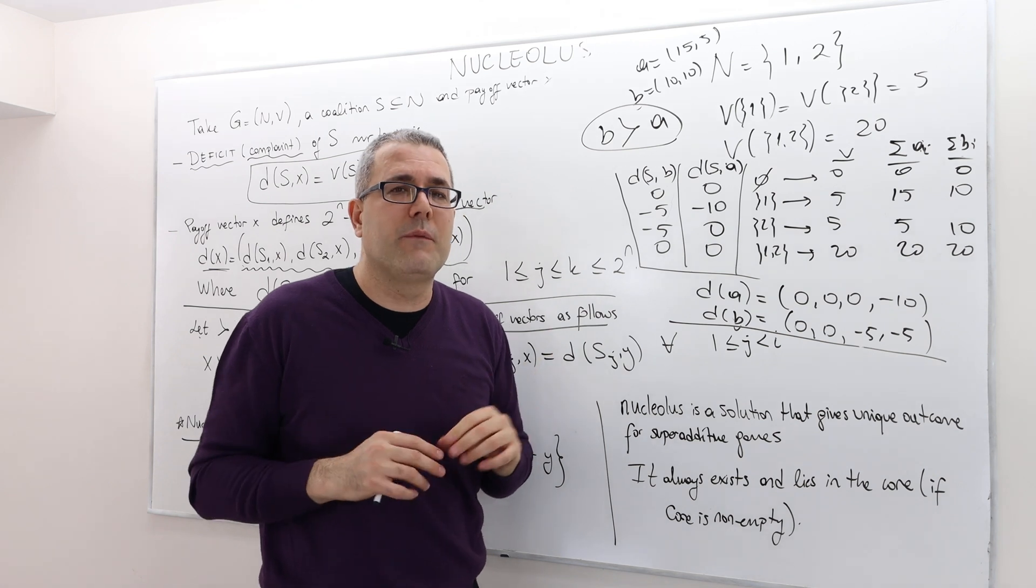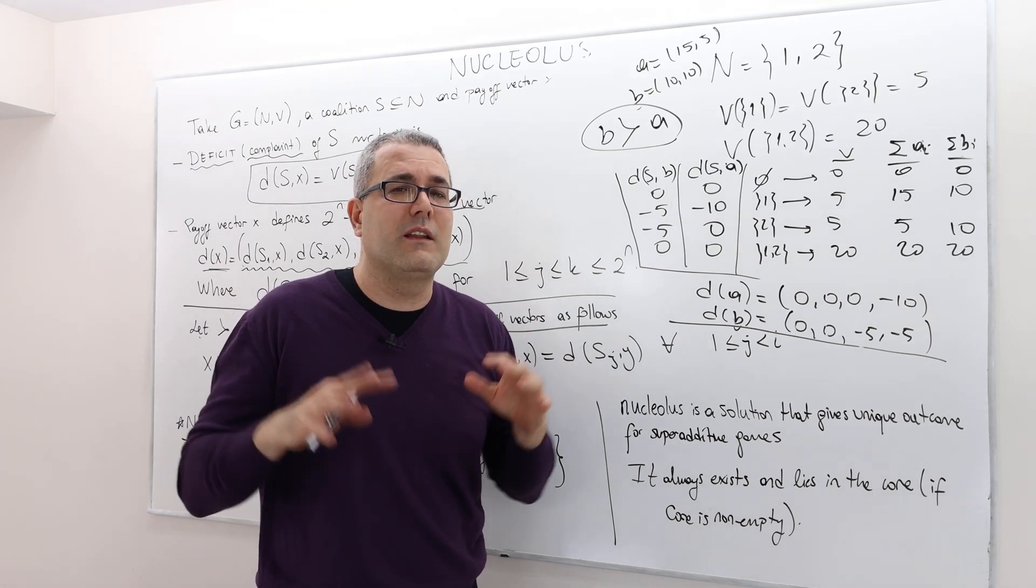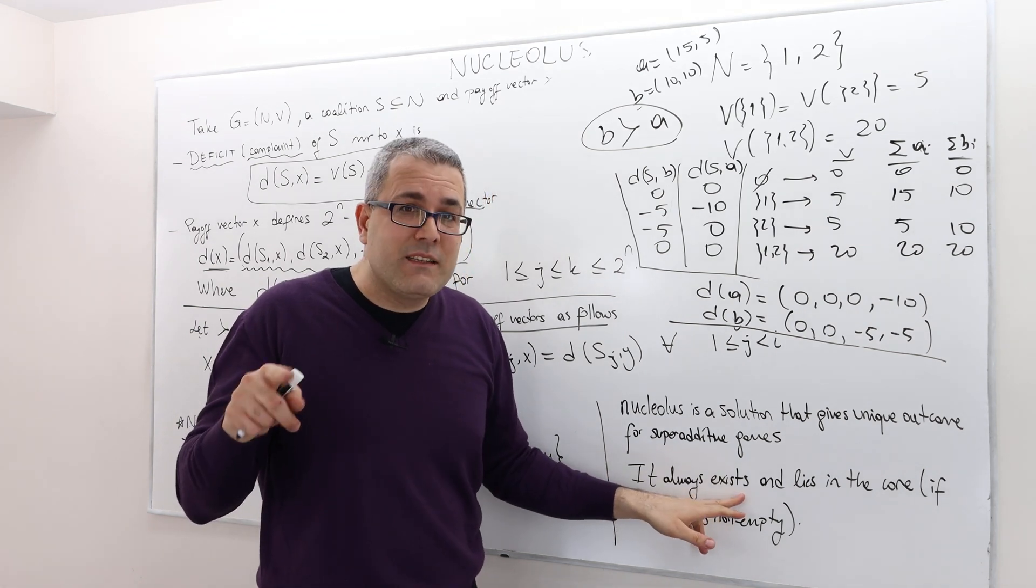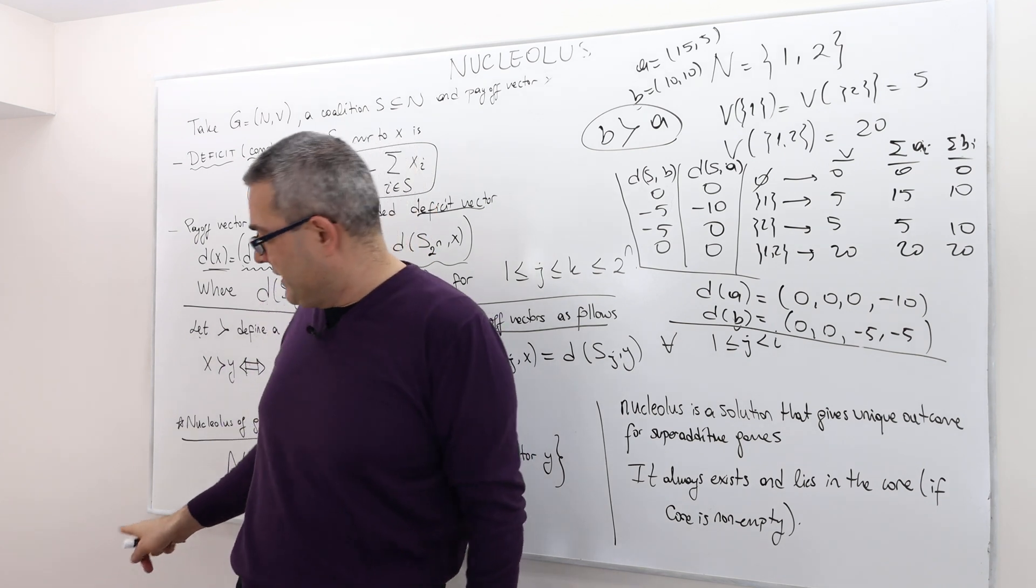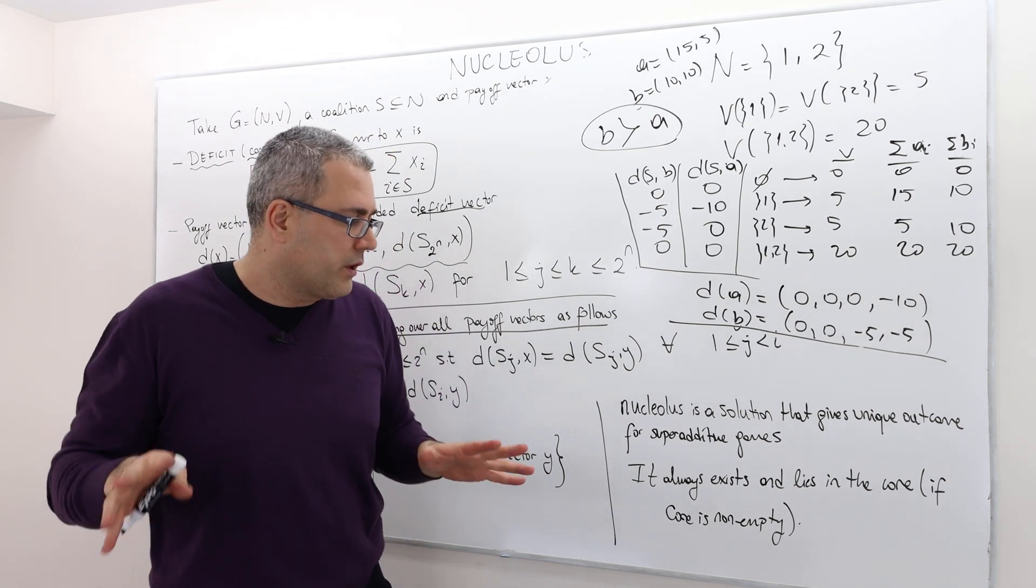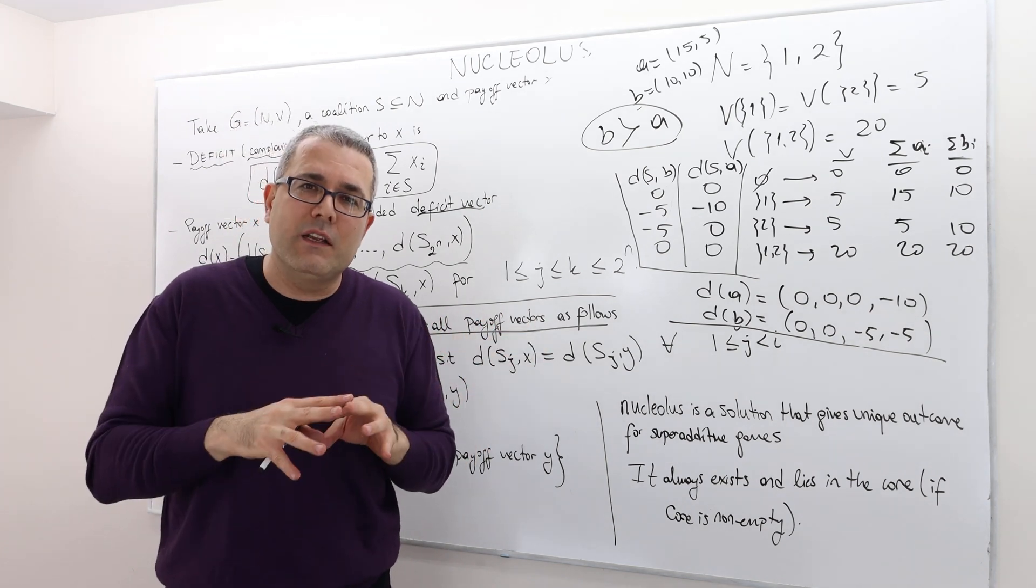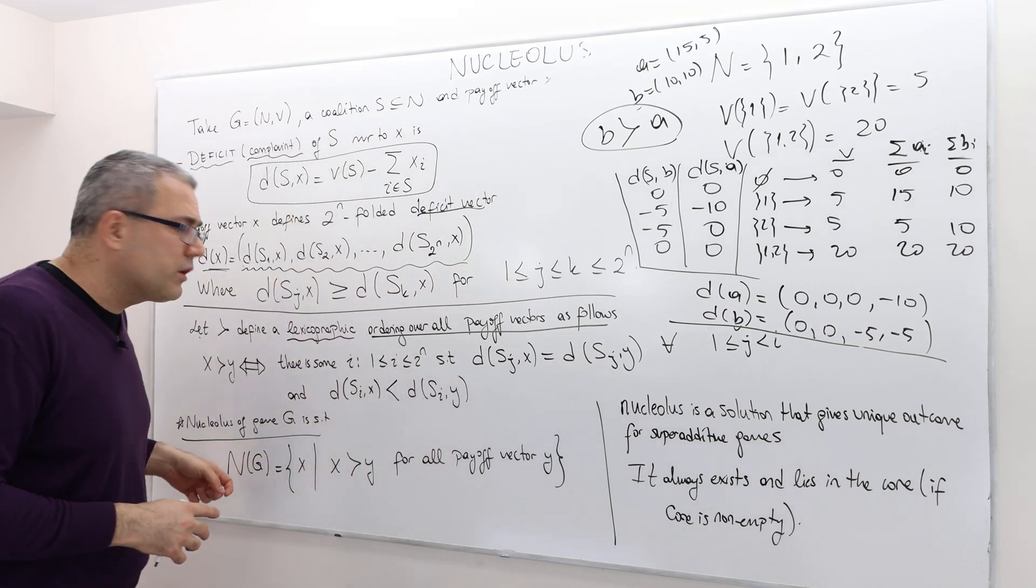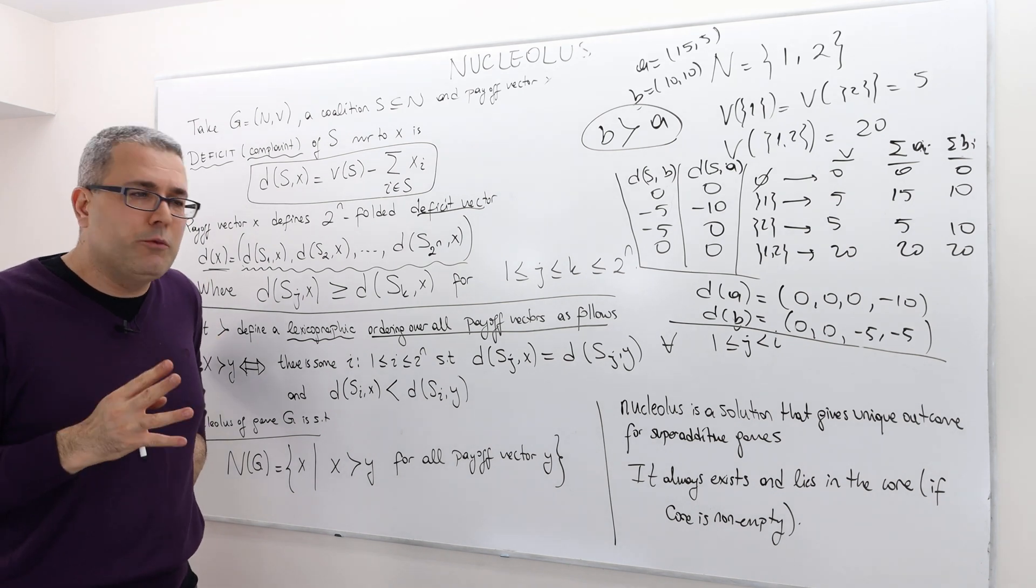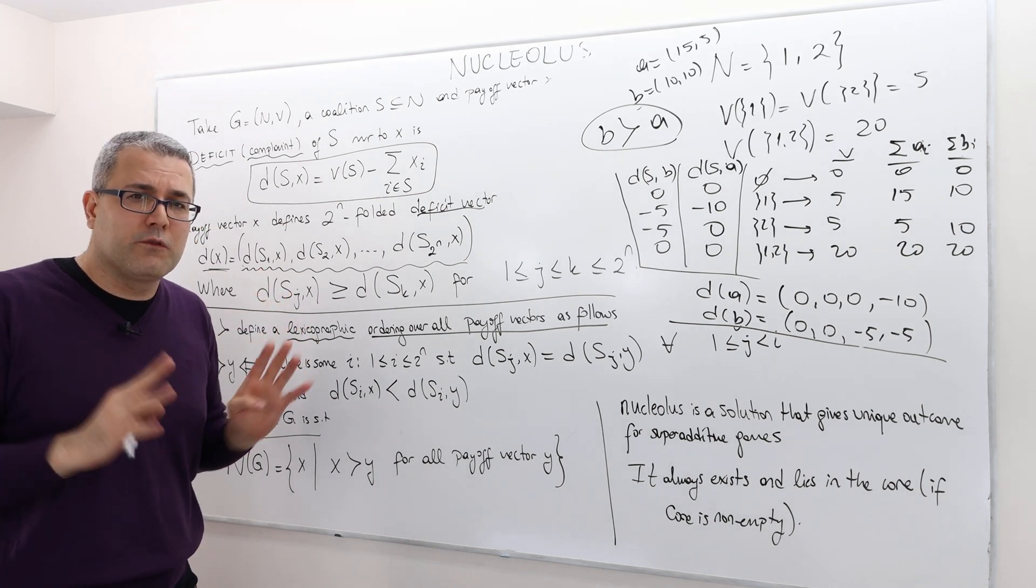Nucleus is a nice solution concept which gives a unique outcome for super additive games. So if your game is super additive, for example, the ice cream game is a super additive game, it has a unique outcome. So for the ice cream example, we can actually calculate the nucleus. But again, in terms of computation, it's complicated, because there are too many system of linear equations is very large. It always exists. That's a nice thing. There always exists one element in the set.